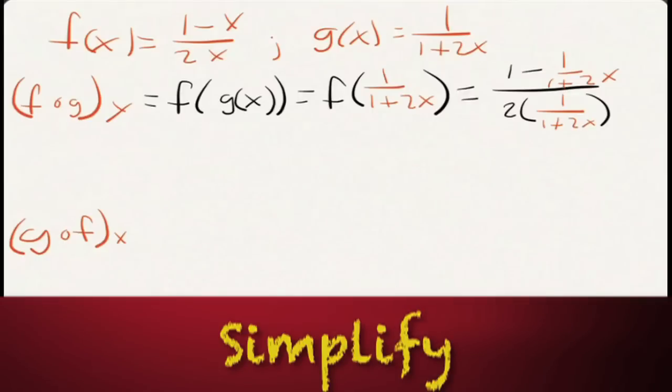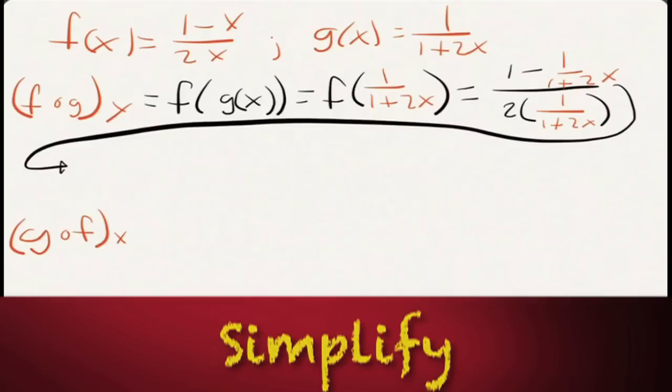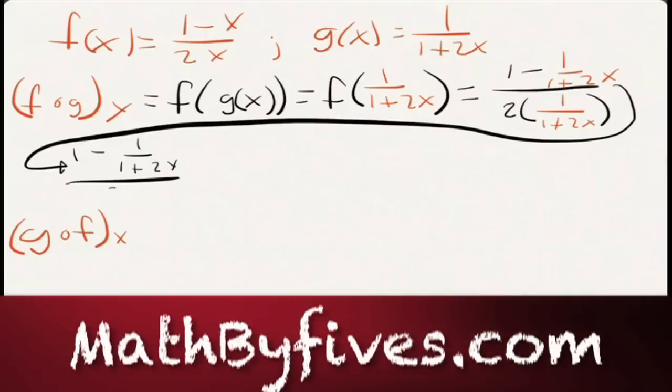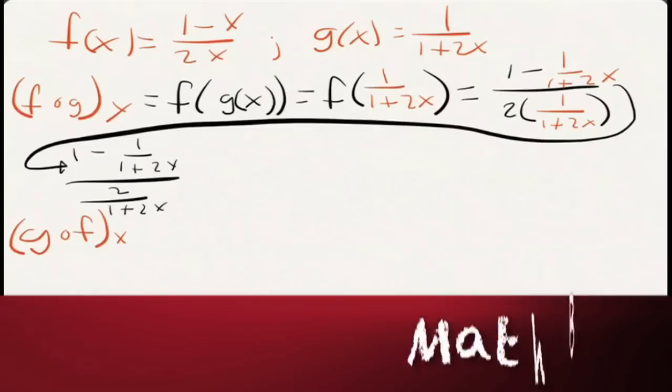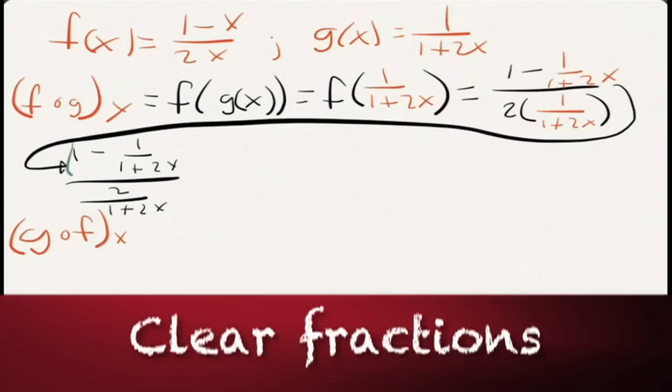Alright, I'm ready to take it on down here. Why did I do that? Because now I have a complex fraction. This is 1 minus 1 over 1 plus 2x all over 2 over 1 plus 2x. Now you probably want to watch the video on complex rational expressions.